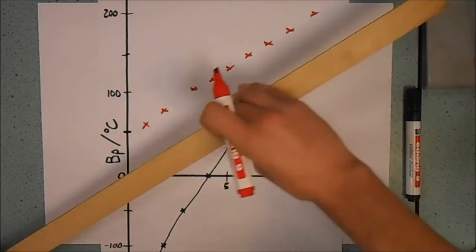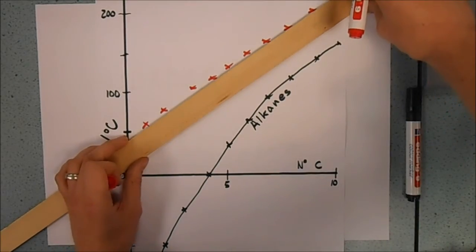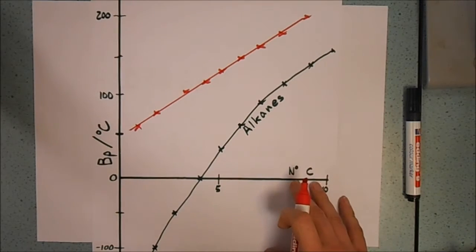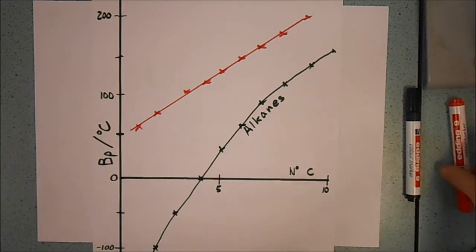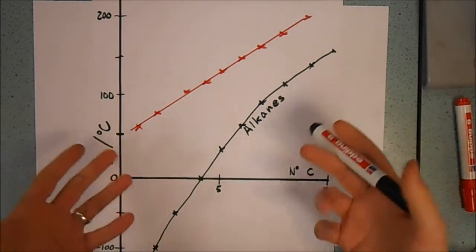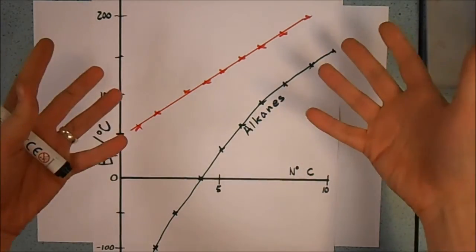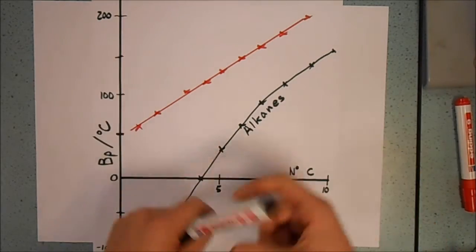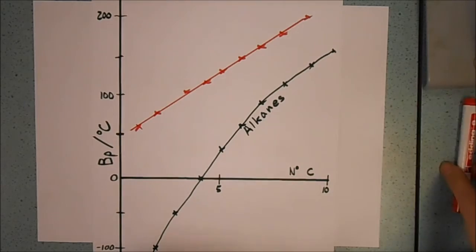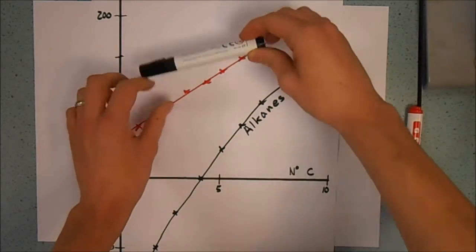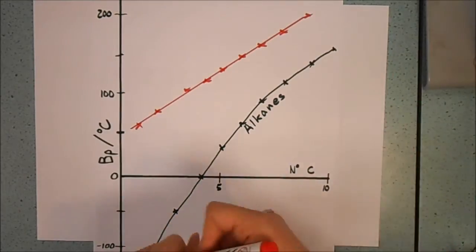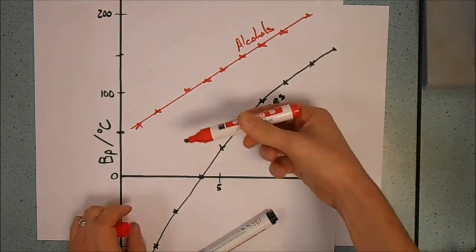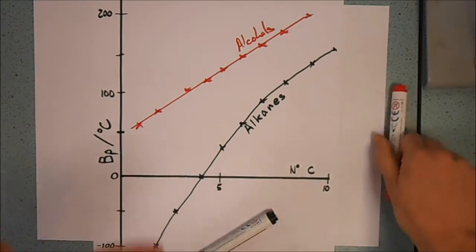Now this gives us a little bit of a puzzle because we know that the larger the relative mass, the higher the boiling point. Because the larger the relative mass, the more electrons, the greater the London forces, the harder it is to separate molecules. So this is basically saying that alcohols have greater forces in between them.